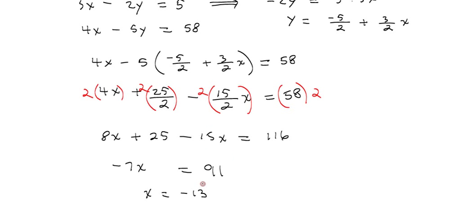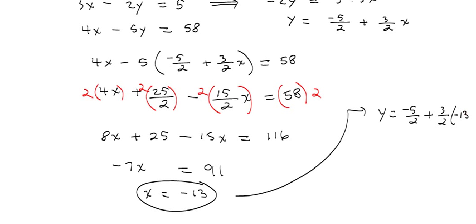Okay, we've got a value for x. We're almost there. Now, we want to solve for y. Well, here's the expression for y, right here, so let's work with it. We know that y is equal to negative 5 halves, plus 3 halves, times negative 13. So, that means y is equal to negative 5 halves. Well, it's going to be 3 times 13, but it's a negative 13, so it's going to be minus 39 over 2. So, that means y is equal to negative 44 over 2. So, y is equal to negative 22.